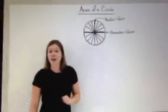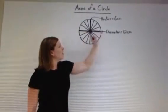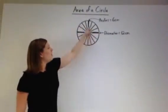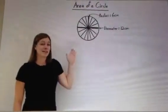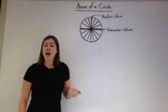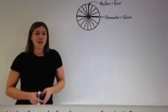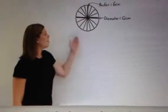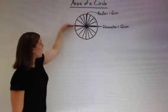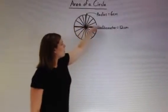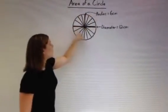To do that, we want to draw a bunch of diameters in our circle. Remember, a diameter is a line that cuts through the circle and goes through the center point. We want to draw a bunch of these diameters to make all of these slices. Now we want to take this sliced-up circle and turn it into a parallelogram to help us find the formula for the area of a circle. To do that, we cut the circle in half along one of the diameters, breaking it into an upper piece and a lower piece.